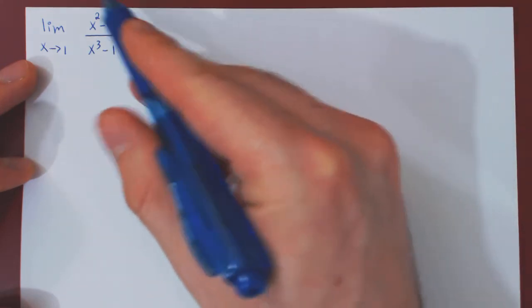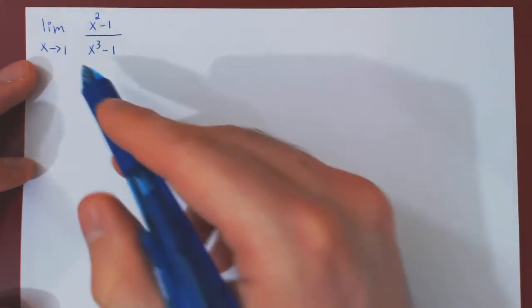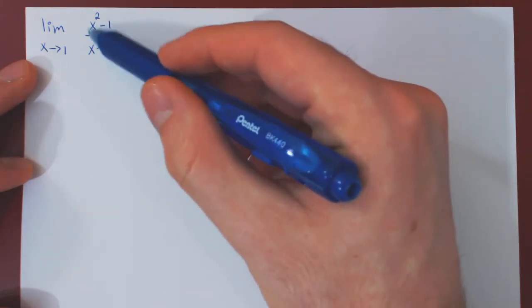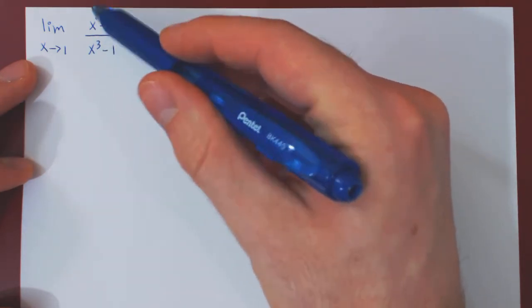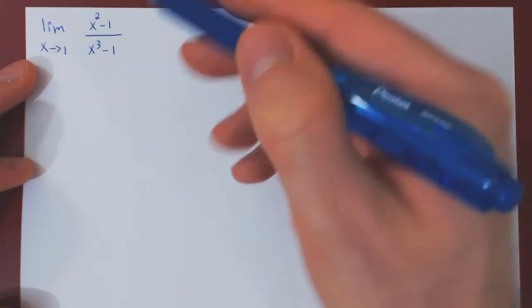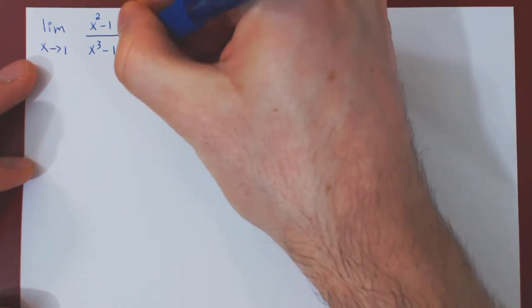So as always, let's look at what kind of case we're dealing with. Well, as x approaches 1, both x squared and x cubed are also approaching 1. 1 minus 1 is 0, so we have here a 0 over 0 case.